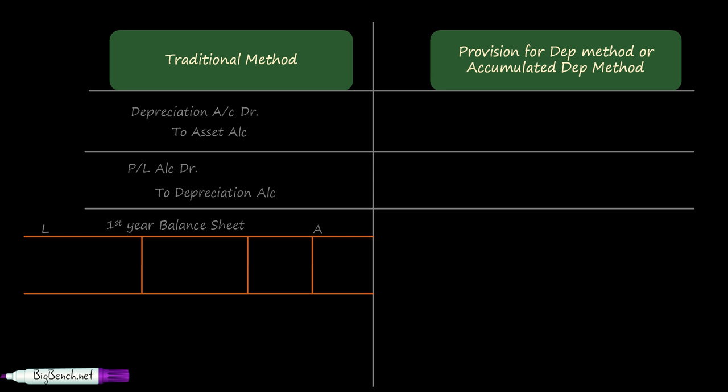Let us prepare an extract of the balance sheet for the first year — only the asset side. Machine, being a fixed asset, appears on the asset side at ₹1,00,000 less depreciation of ₹5,000, giving an outer column figure of ₹95,000. Depreciation, being a nominal account, goes to the P&L account and does not appear in the balance sheet. This ₹95,000 is the WDV or book value.